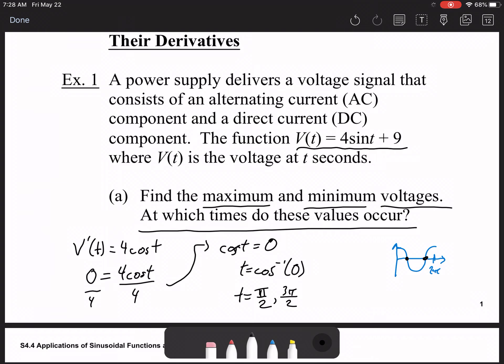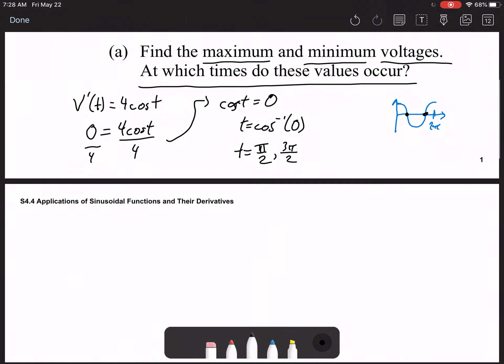We're going to need to prove that these are a maximum or minimum. Most likely, you probably won't want to use the first derivative test here. You'd probably actually want to use the second derivative test, because the first derivative test requires various different intervals and could cause a little bit of challenge. So the second derivative here is -4sin(t).